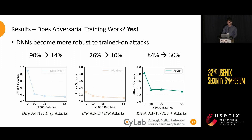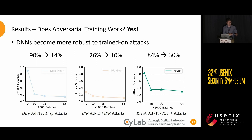As a side note, we noticed that most robustness is gained within the first 10,000 batches. However, we can't simply stop there, because we lose a lot of accuracy on the original non-adversarial binaries. To regain that accuracy, we need to keep training beyond that point.